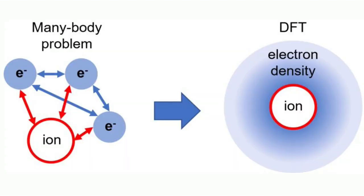Let me describe it with the help of a diagram. As you can see, I have an iron with three electrons. For ab initio and semi-empirical methods, we have to consider each of these electrons and find the wave function for each of them. But what if I talk about DFT?